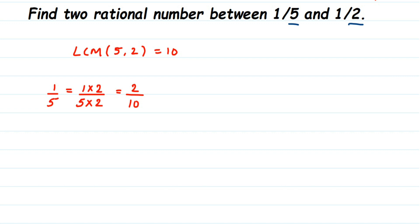Now here, 2/10 and 1/5 are equal. They are equivalent rational numbers. If you cancel 2/10, we will get back 1/5.